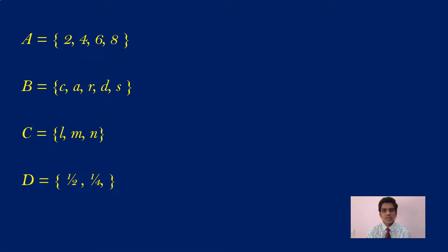Have a look at this. Here I have taken four sets. A is set of 2, 4, 6, 8. B is set of C, A, R, D, S. C is set of L, M, N. And the last set D is set of 1/2, 1/4.